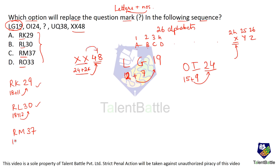Checking options: RK29 — R is 18, K is 11, sum is 29. RL30 — R is 18, L is 12, sum is 30. RM37 — R is 18, M is 13, sum is 31, which does not equal 37, so option C is eliminated. RO33 — R is 18, O is 15, sum is 33. So options A, B, and D all satisfy the condition.